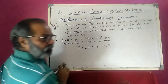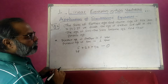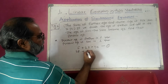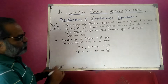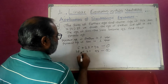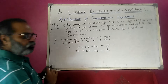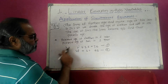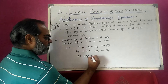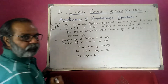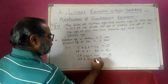For the second equation: if we double the age of father, that is 2f, and add the age of son, plus s, the sum is equal to 95. Now I solve by elimination. The coefficient of f in equation 1 is 1 and in equation 2 is 2, so I multiply equation 1 by 2: 2f plus 4s equals 140. This is equation 3. Equation 2 remains as 2f plus s equals 95.